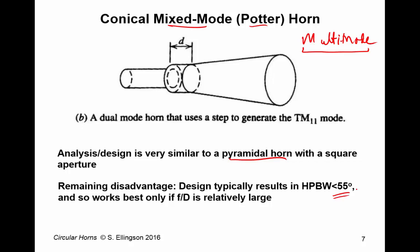So, if you go back and think about our axisymmetric paraboloidal reflector optics, you'll see that that corresponds to F over Ds, which are relatively large. So, despite the advantages of a Potter horn, typically don't show up for F over Ds, which are small.